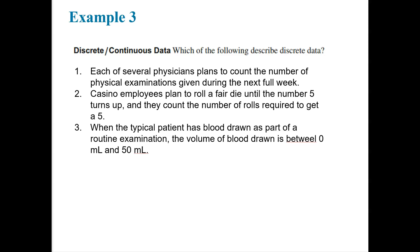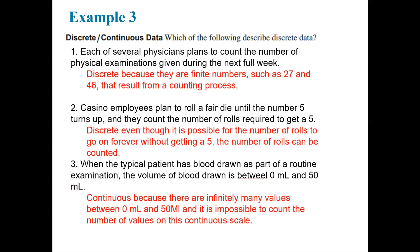Casino employees plan to roll a fair die until the number five turns up. So they're rolling the die. They're counting the number of rolls. Would you have half of a count or an eighth or a quarter or 0.005 of the counts of a roll? No. So that would be discrete. But the volume of blood, whoops, there's a typo there. The volume of blood between zero and 50, we could keep going decimal by decimal further and further. And so that is going to be continuous.